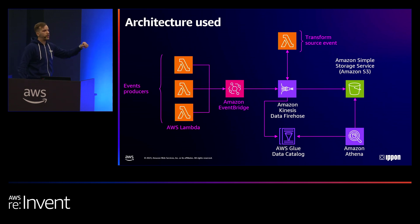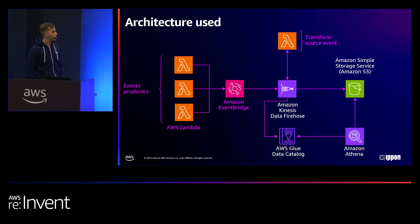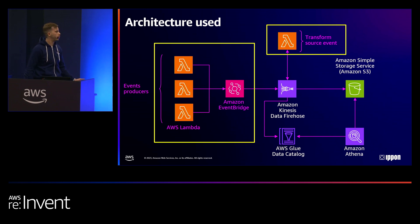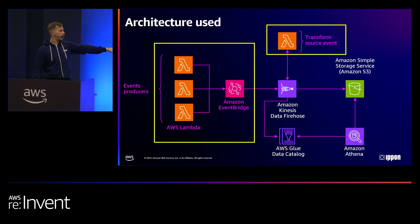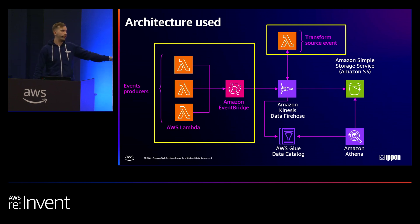This is the architecture that I've put in place with CDK. We are going to focus first on two services: AWS Lambda and also Amazon EventBridge.